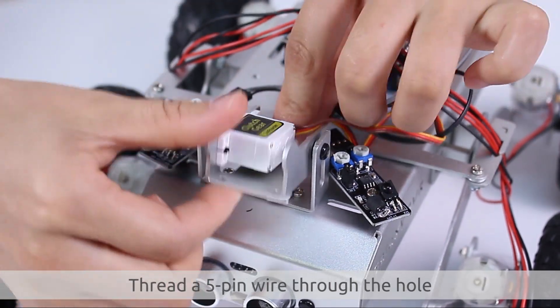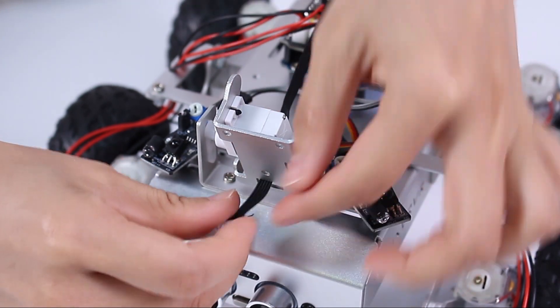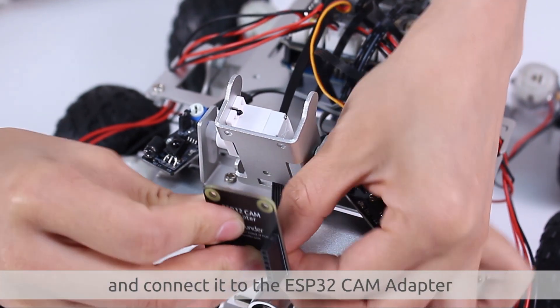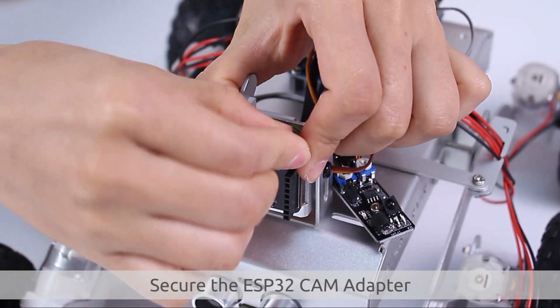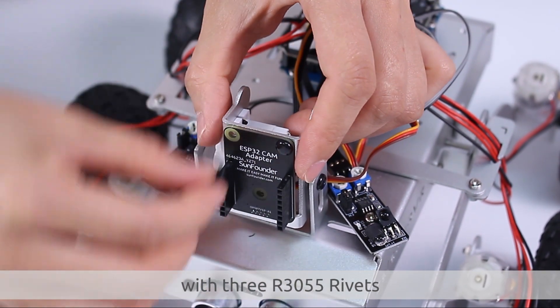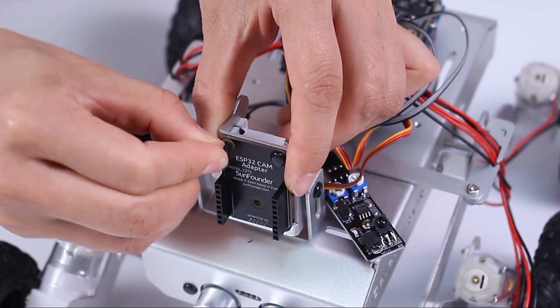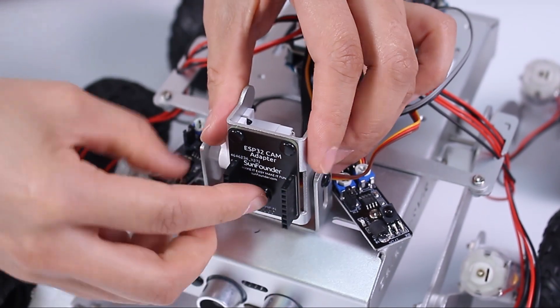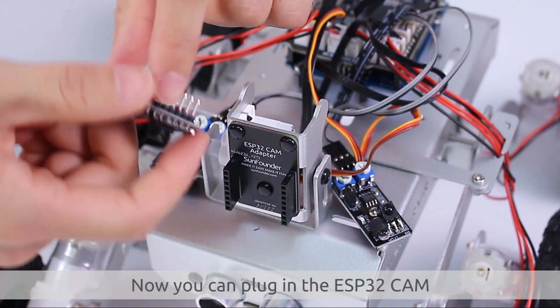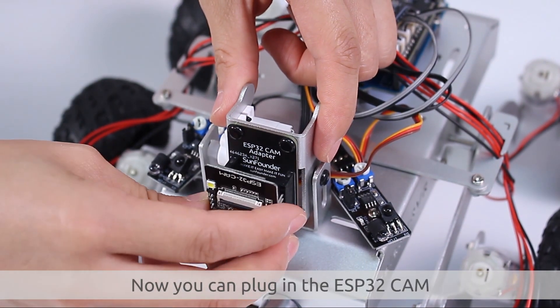Thread a 5-pin wire through the hole and connect it to the SP-32 cam adapter. Secure the SP-32 cam adapter with three R3055 rivets. Now you can plug in the SP-32 cam.